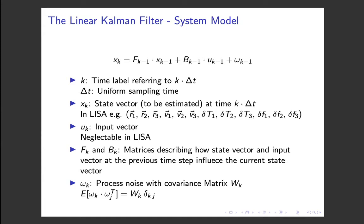Let me say a few more words about the system model and the observation model for a linear system. Here you can see the system model of a linear system. x_k is the state vector at time k — k is the time label, not labeling the state vector components. The first term in this equation tells us how the state vector is propagated in time; the state vector at the previous time is related to the state vector at the current time by the state transition matrix F, which is part of the system model. The second term is the input term: u_k is the input vector, which tells us how physical input would affect the system — for example, if we burn fuel, this term would tell us how the system would be accelerated or decelerated. Of course, our system is not perfect, so we include a process noise vector omega_k.